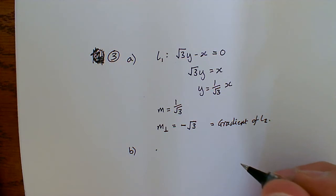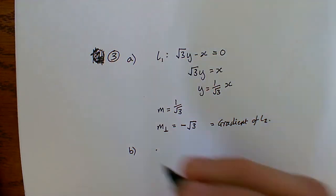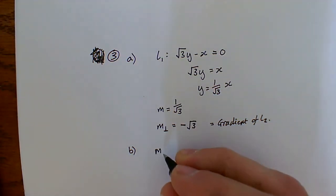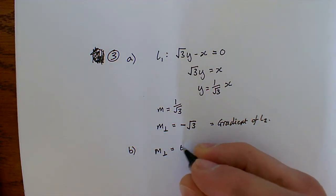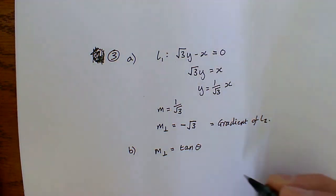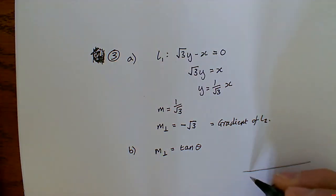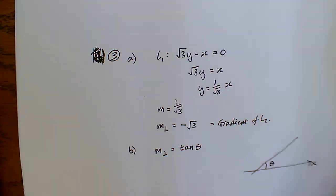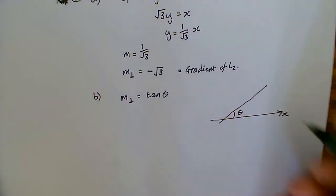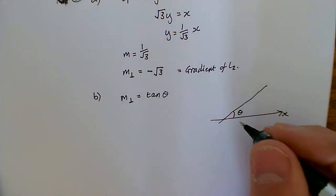The angle L2 makes with the positive x-axis, but this is where we're remembering that M, in this case, our perpendicular gradient is equal to tan of theta, where we've got some line that we're working with, and this is the positive x-axis. So we're working out this angle in here is the one we're asked for.